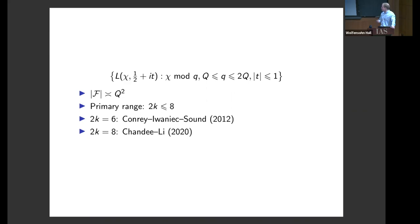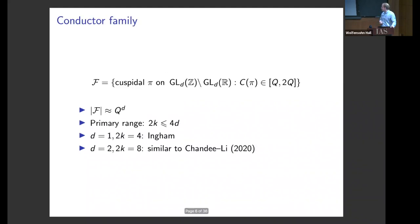There are also results involving GL(2) modular forms where you not only take all forms of a given level and nebentypus, but average over the nebentypus as well. As remarked in questions after the last talk, you could further average over the modulus. That gives families where the primary range goes up to something like the 10th moment. One can make the primary range quite a bit bigger by going to automorphic forms on higher rank groups.